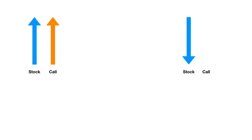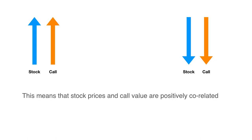Now if you really look at these examples, you will realize that when the stock price moves up from Rs.100 to Rs.130, the call value also moved up from Rs.3 to Rs.24. And subsequently when the stock price came down from Rs.130 to Rs.70, the call value also came down to Rs.1. Therefore, we can summarize by saying that if the stock price goes up, the call price will also go up, and if the stock price comes down, the call value will also come down. This means the stock price and call value are positively correlated — they move in the same direction.